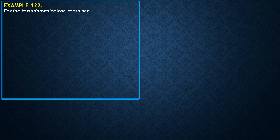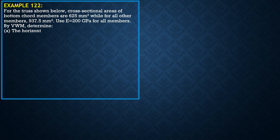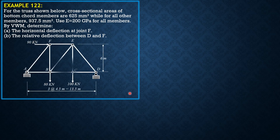For the truss shown below, cross-sectional areas of bottom chord members are 625 mm square, while for all other members, 937.5 mm square. Use modulus of elasticity of 200 gigapascals for all members. By virtual work method, determine the horizontal deflection at joint F, and letter B, the relative deflection between D and F.